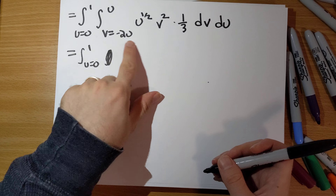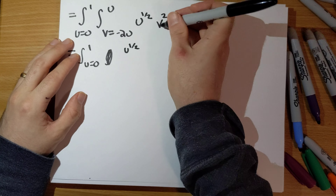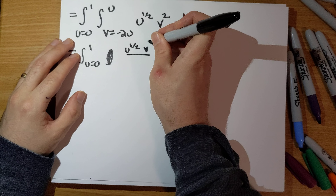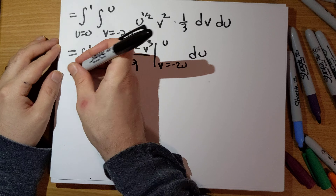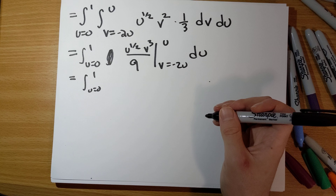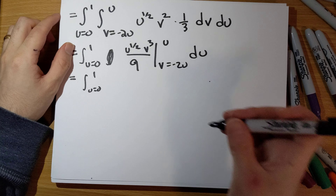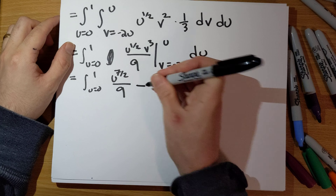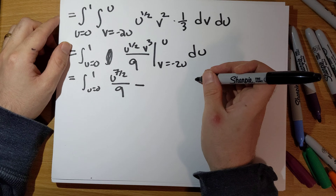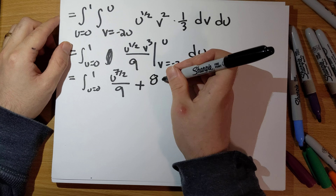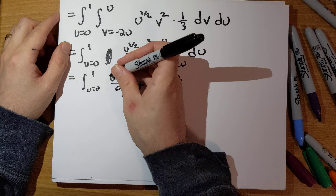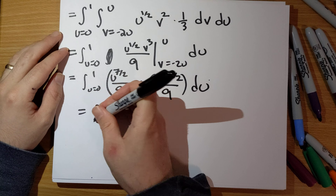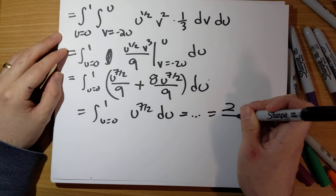Now we evaluate. Integrating with respect to v, we get v³/3, and combined with the existing factor of 1/3, that gives v³/9. Evaluating from v = −2u to v = u, we get u³ · u^(1/2) = u^(7/2) over 9 for the upper limit, minus (−2u)³ · u^(1/2)/9 = −8u^(7/2)/9 for the lower limit. These combine to give u^(7/2), and when you integrate that and work it out, you get 2/9.